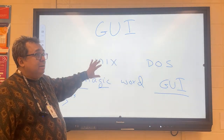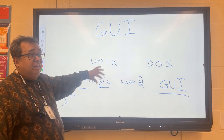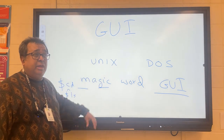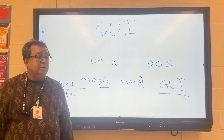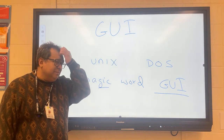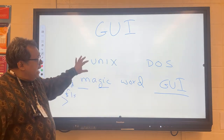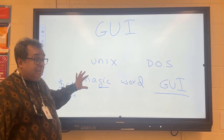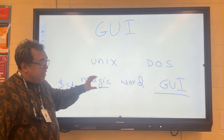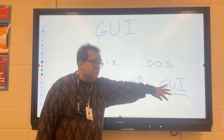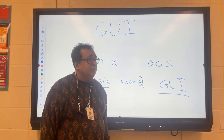Unix isn't really around anymore — it's kind of evolved to Linux. So it's still magic word oriented, but they've started to use some GUI stuff also. That is basically the way things have evolved.